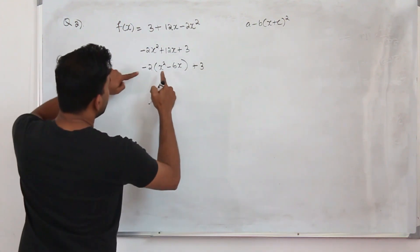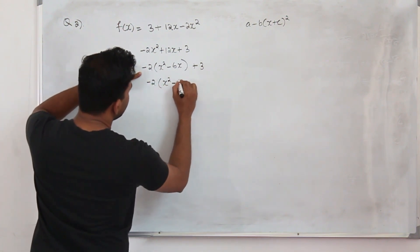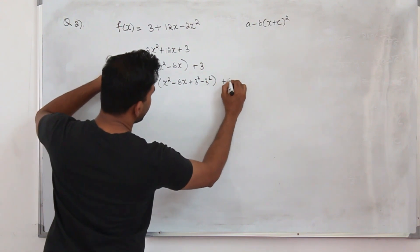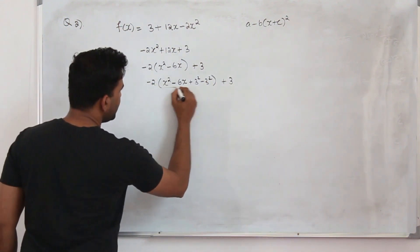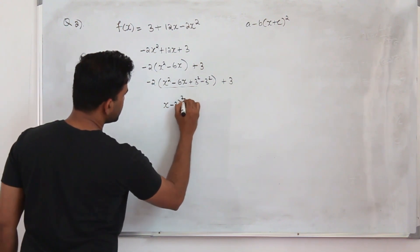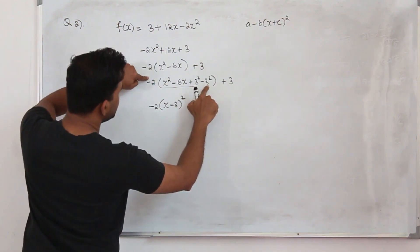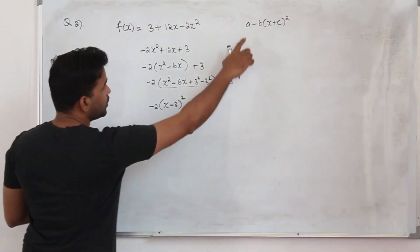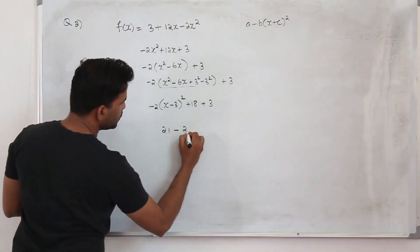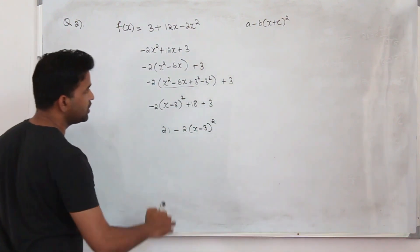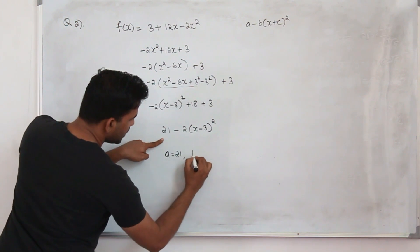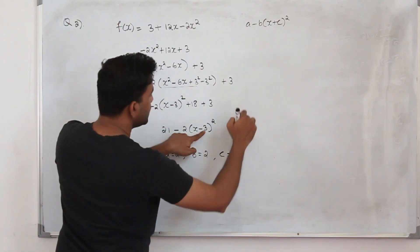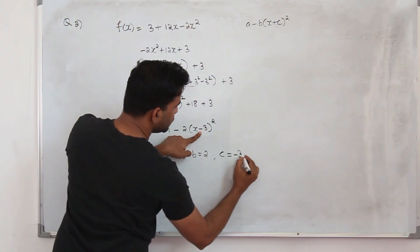Now: -2(x² - 6x). Take half of the coefficient of x, which is 3, so write plus 3² minus 3² inside the bracket. These three terms become (x - 3)². The -9 multiplied by -2 gives +18, and 18 + 3 = 21. So the result is 21 - 2(x - 3)². Comparing: a = 21, b = 2, c = -3.